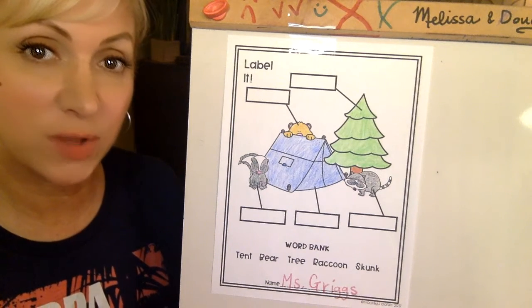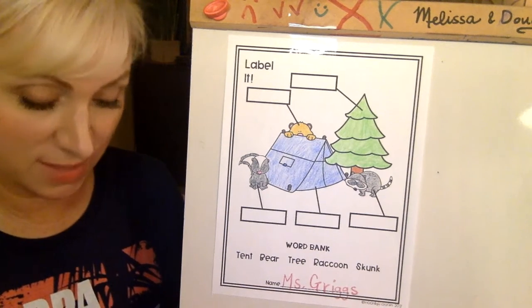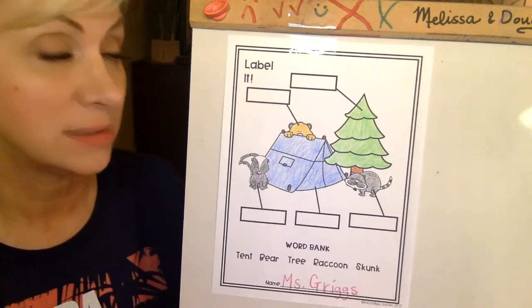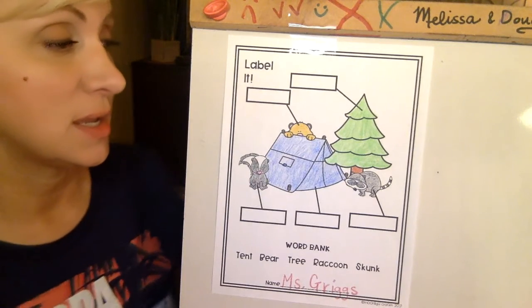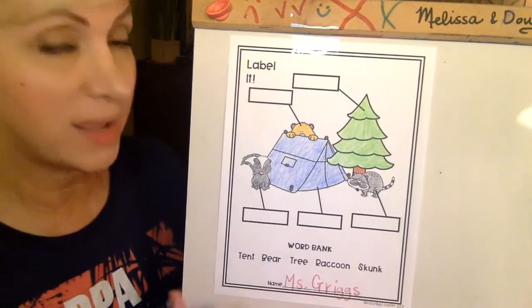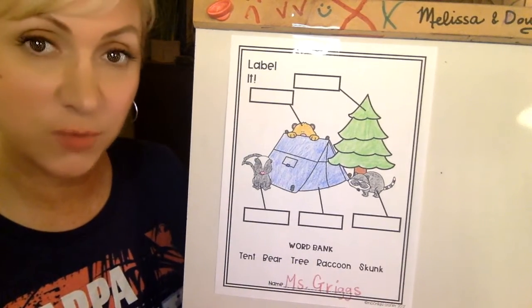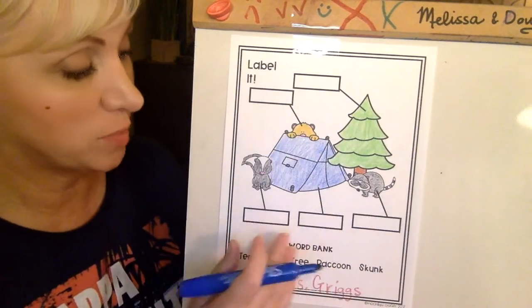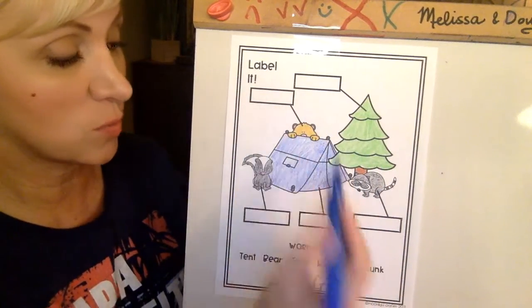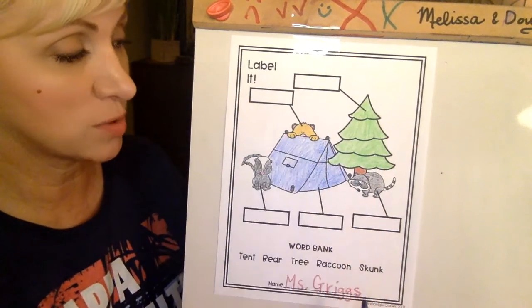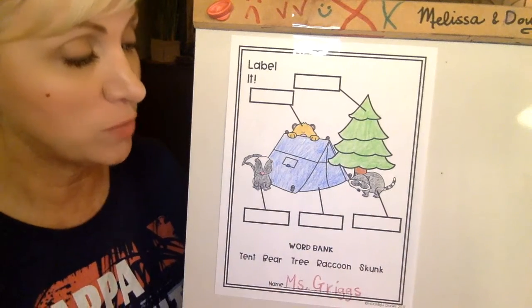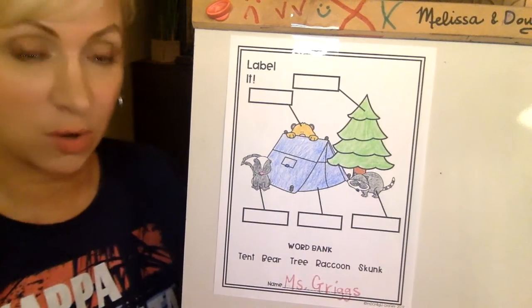Hello, my friends. Here we are with a camp-themed labeling activity. We have a word bank down here, some vocabulary words, and we have a cool picture here. We have some boxes that we're going to write our words in once we match them up with where we think that they go.